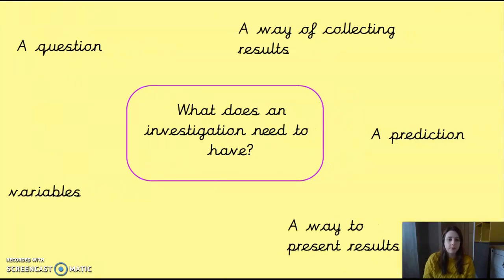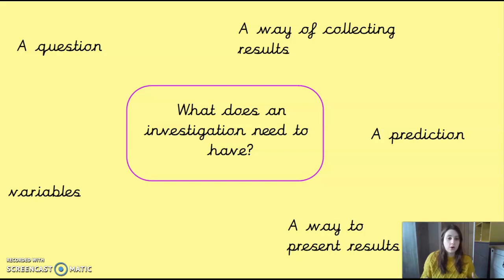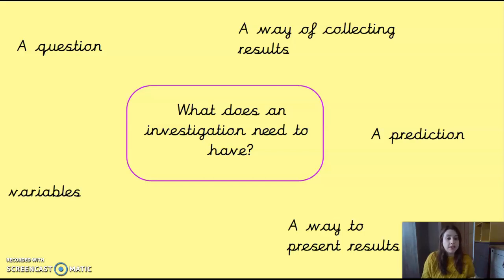You might have come up with some of these things. You need first of all a question that you're investigating. You need a way of collecting your results — in our science investigation this week, our way of collecting results was by a questionnaire, because that meant everybody can get involved whether they were at home or at school. You also need a prediction: what you predict is going to be the trend or the outcome before you look at the results.